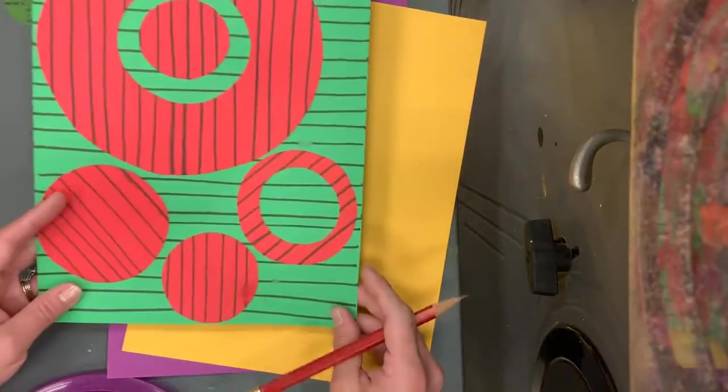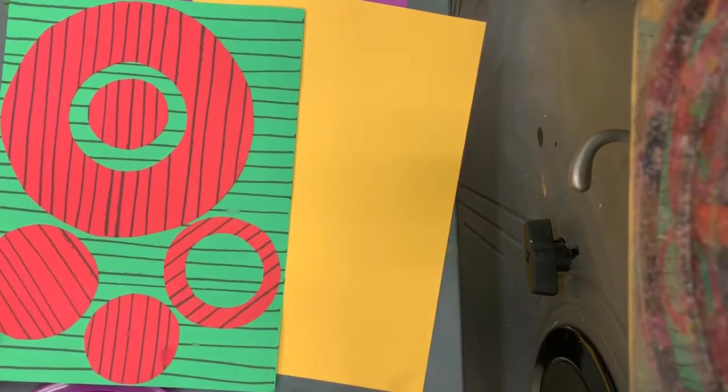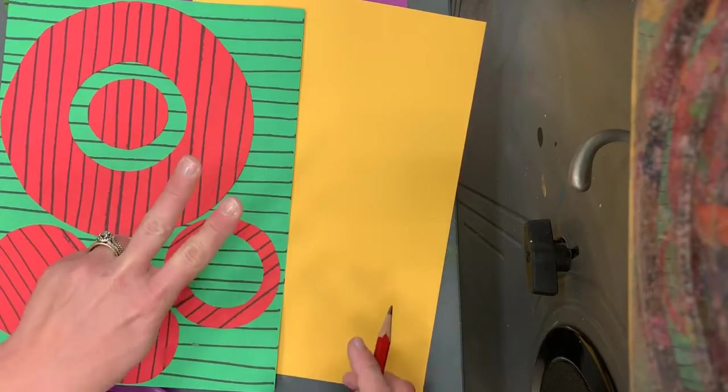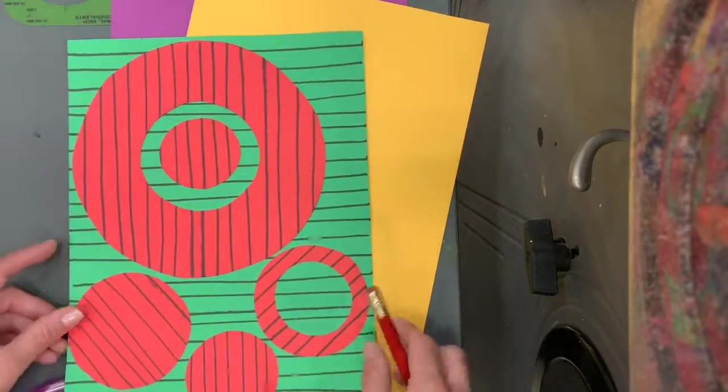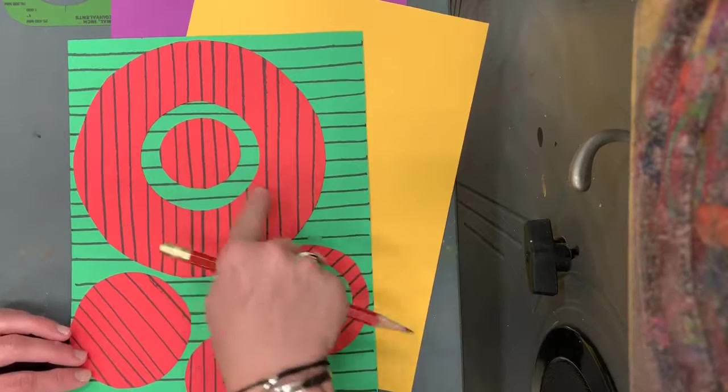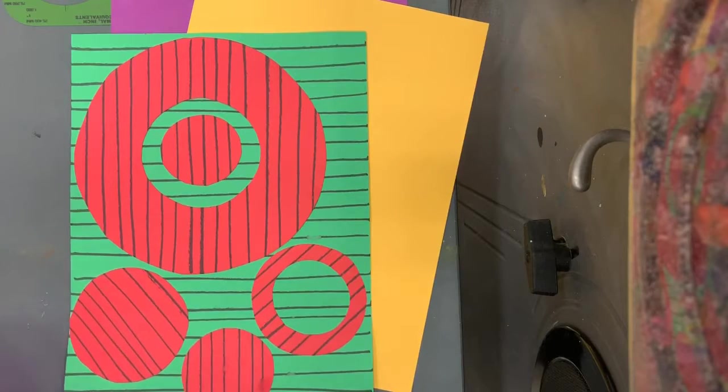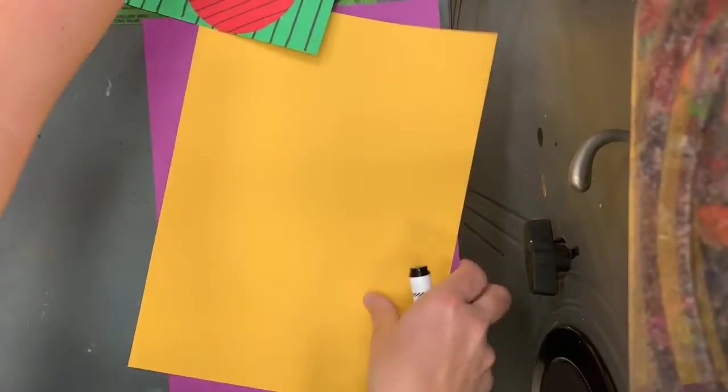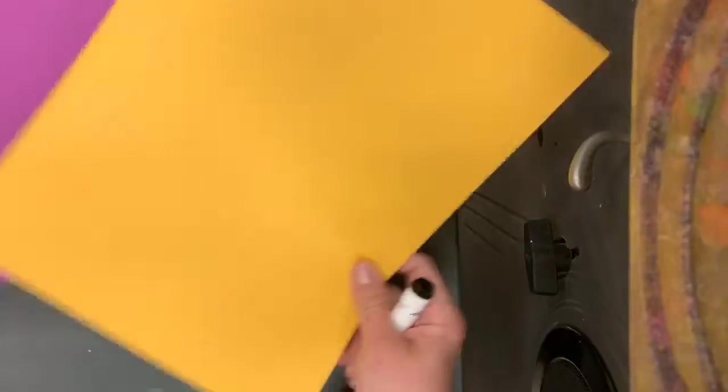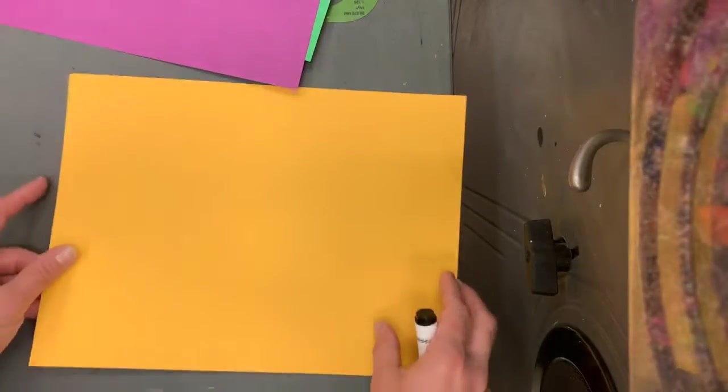So the first thing we're going to do today is we are going to create even lines on two pieces of paper. To do that it's actually easier than it looks. You can see that the lines on my red and green are pretty even and it's not hard to do. Here's the trick for doing it. Both of these pieces of paper I'm going to make lines on. I'm going to start with the yellow because I think it's easier to see.